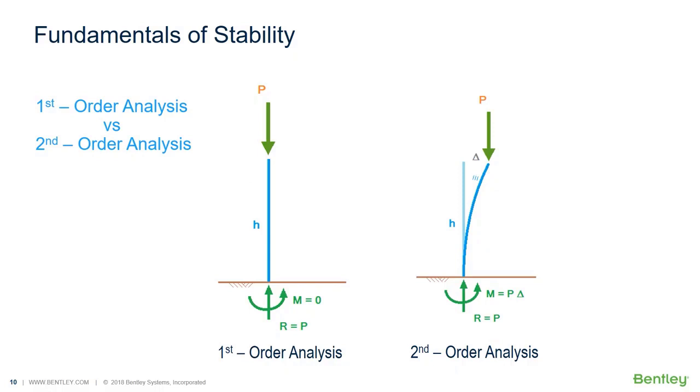The second order analysis more correctly indicates that the design forces in the column are an axial force P and a design moment P-delta.